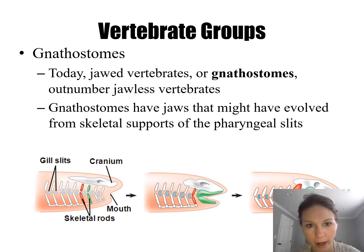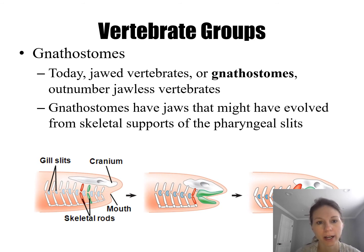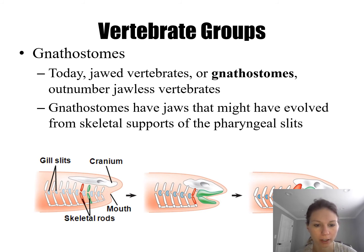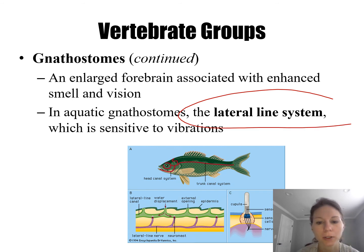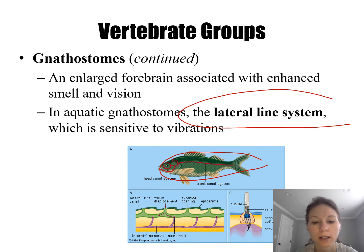Moving on, we have vertebrates with a cranium and jaws — they're called gnathostomes. The jaws actually originated from the gill or pharyngeal slits in the embryo. They have a better-developed brain, better smell, better vision, and the aquatic ones have a lateral line system — a kind of distant touch that allows them to feel vibrations in the water.